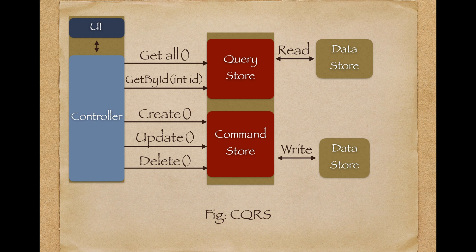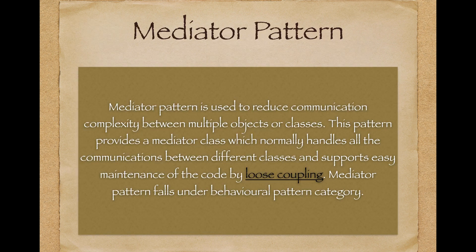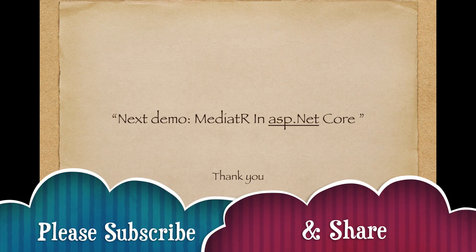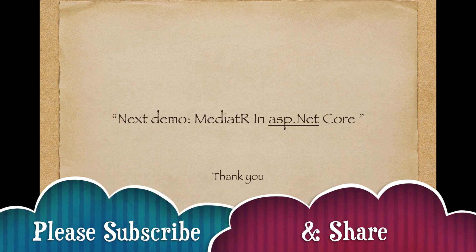To achieve CQRS, there is a pattern called the mediator pattern. The mediator pattern is used to reduce the communication complexity between multiple objects or classes. It provides a mediator class that sits between multiple classes, handles all communication responsibilities between them, and provides very loose coupling in our application. This mediator falls under the behavioral pattern category.